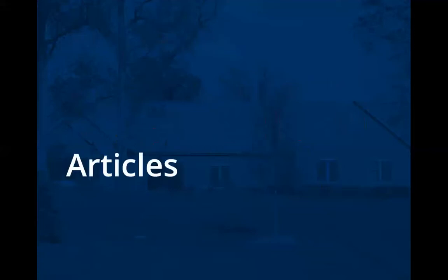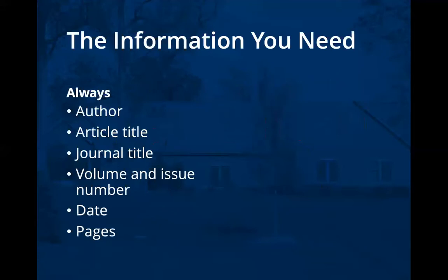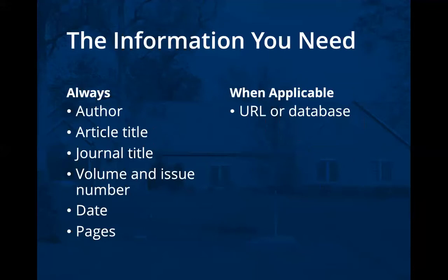Now let's look at an example for articles — journal articles, things in periodicals. Here's the information you will always need: author, article title, journal title, volume and issue number, the date the journal issue was published, and the starting and ending pages for the article. When applicable, if you're viewing it online, add a URL for something publicly available on the internet, or a database name if it's something in one of the library subscription databases.